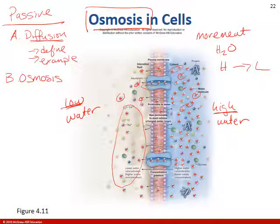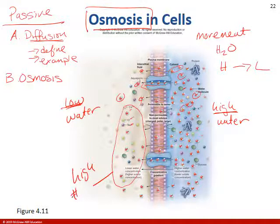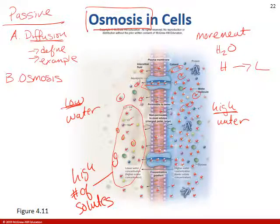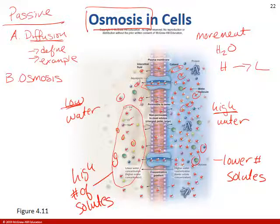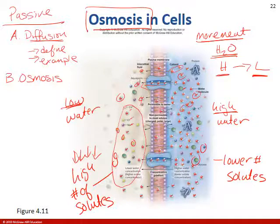You can have glucose molecules, calcium, or ions like sodium and chloride. Water moves to wherever the solute is high. One side has a high number of solutes and the other has a lower number. Osmosis is the movement of water from a high concentration of water to a low concentration of water — water always moves to where you have the highest number of solutes until it reaches equilibrium.